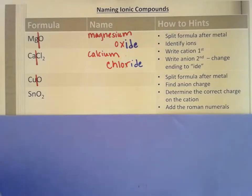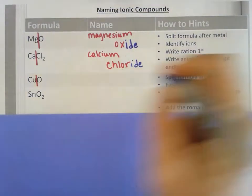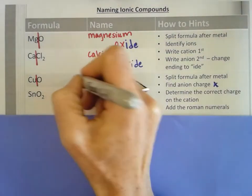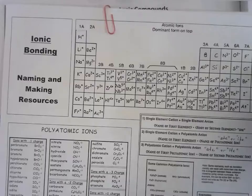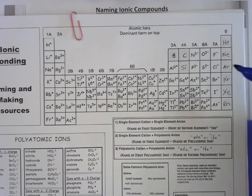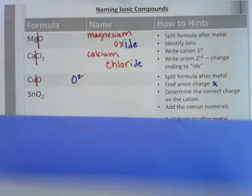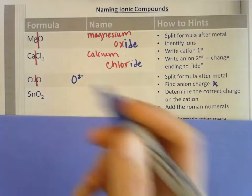The best way to do it is to find the charge on the anion, so the O. O is group 6A. It needs two more electrons, so the overall charge is minus two. If you double check this chart, oxygen only has one option.